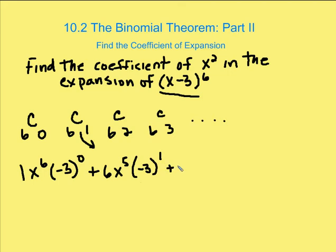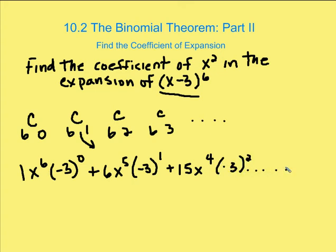And then we took the value of six choose two, which is going to be 15, times x to the fourth. So as you see, we're descending: six, five, four — negative three squared — and so on and so forth. The question is, how do I find the value of the coefficient for x squared without having to go through this entire process?